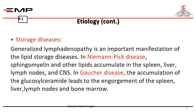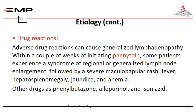Some storage diseases are characterized by generalized lymphadenopathy, in which certain materials are deposited. In Niemann-Pick disease, sphingomyelin and other lipids accumulate in the spleen, liver, and lymph nodes. In Gaucher's disease, the accumulation of glucosylceramide leads to engorgement of the spleen, liver, lymph nodes, and bone marrow.